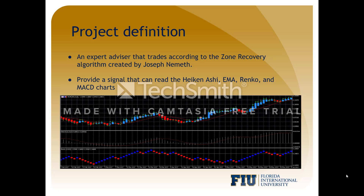Zone Recovery comes in two parts. First, you must enter the market, and second, you must exit. To enter the market, the following conditions must hold true: on the Heikin-Ashi chart, the bar must be green; the EMA trend must be trending upwards; the Wrinkle chart must be green or blue; and that must be validated by the MACD chart. These conditions are what we call our entry condition.